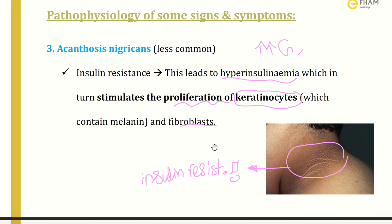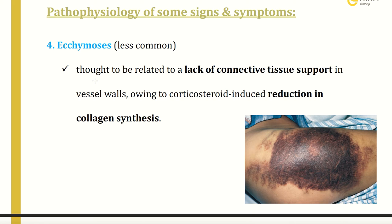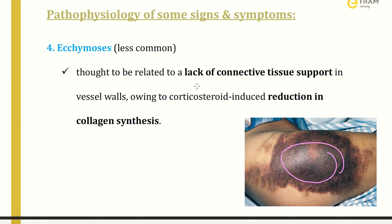The fourth sign is ecchymosis, which is less common in Cushing Syndrome. It is known to be related to a lack of connective tissue support, owing to corticosteroid-induced reduction in collagen synthesis. When there is a reduction in collagen synthesis, the vessel wall becomes weak, resulting in ecchymosis.